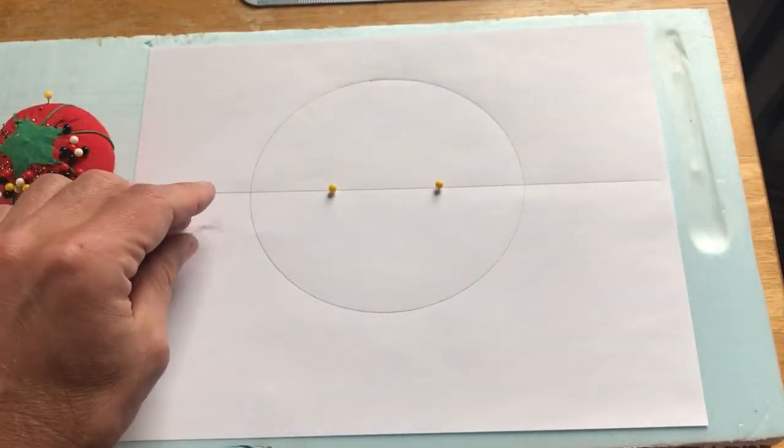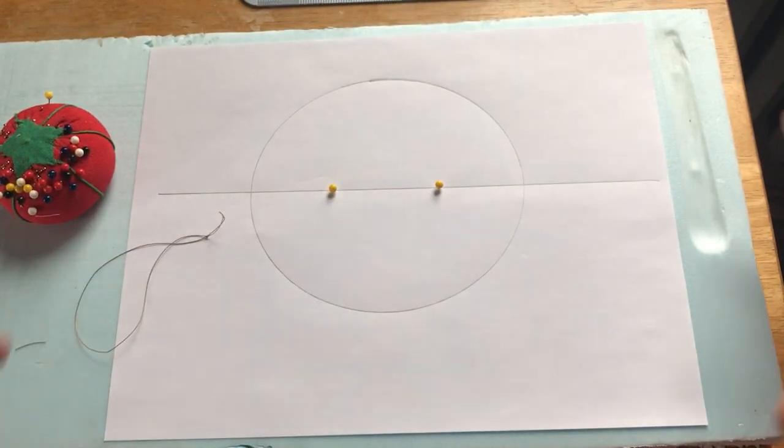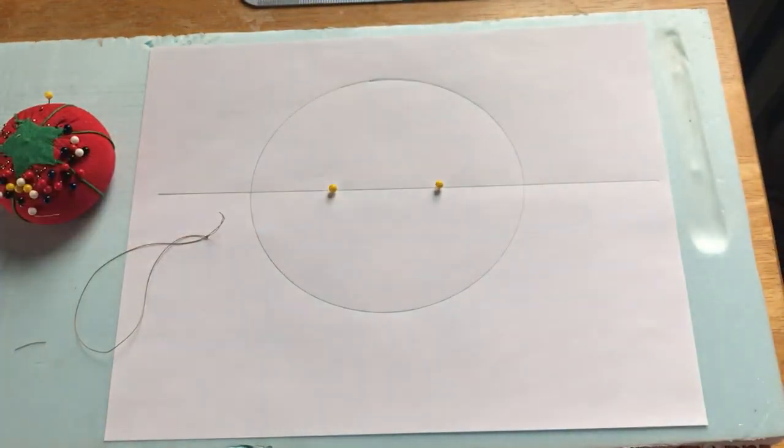Now, obviously if we put just one pin in the center and did the same thing, we would get a circle. So this ellipse is just a flattened circle.